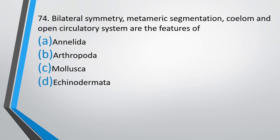Question number 74. Bilateral symmetry, metameric segmentation, coelom, and open circulatory system are features of? Option A: Annelida. Option B: Arthropoda. Option C: Mollusca. Option D: Echinodermata. The correct answer is Option B — Arthropoda, which exhibits bilateral symmetry, metameric segmentation, coelom, and open circulation.